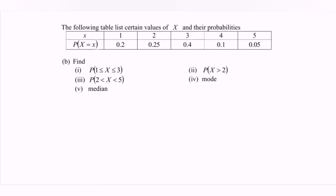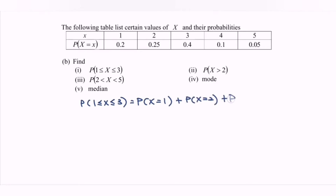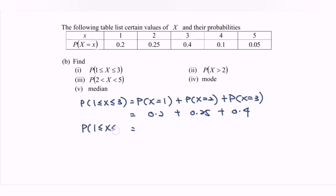For part B, question 1, we find the probability that X is greater than or equal to 1 and less than or equal to 3. By referring to the table, where 1 and 3 are both included, this involves P(X=1) plus P(X=2) plus P(X=3). Substituting the values, we have 0.2 plus 0.25 plus 0.4. So the probability that 1 ≤ X ≤ 3 is equal to 0.85.